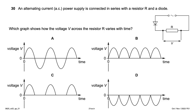An alternating current supply is connected in series with a resistor R and a diode. Which graph shows how voltage across R varies with time? Without a diode, you'd see a full sine wave (graph A). With a single diode, it eliminates the negative half — option C. With four diodes (full-wave rectifier) you'd get option B.